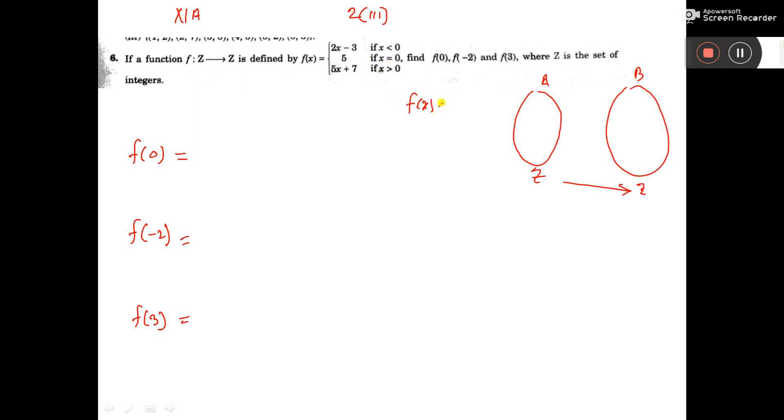So f(x) is equal to 5 if x equals 0, and we are finding f(0). So what is the value of f(0)? Here you put f(0) is equal to 5, so 5 is the answer.